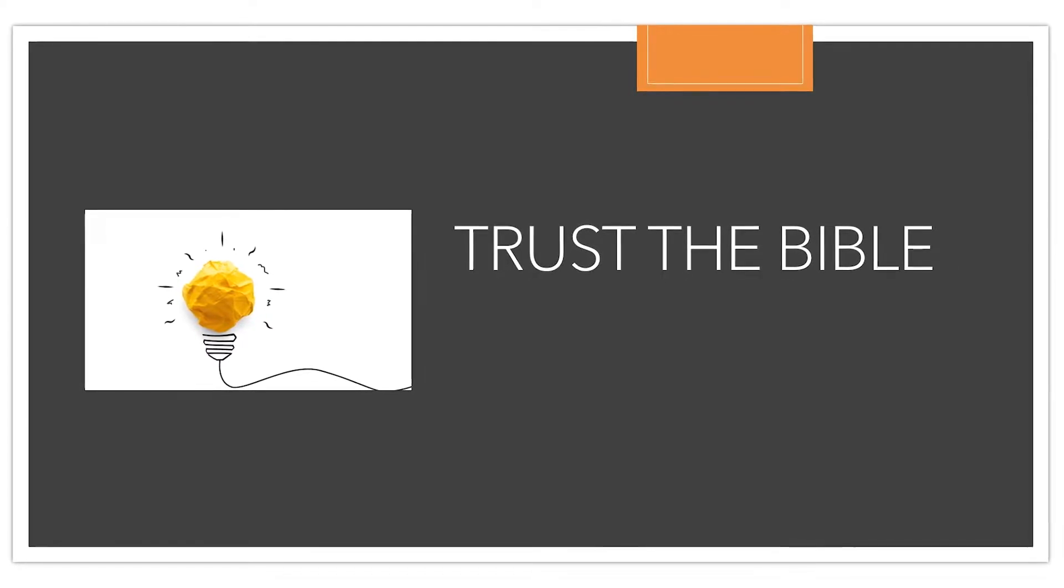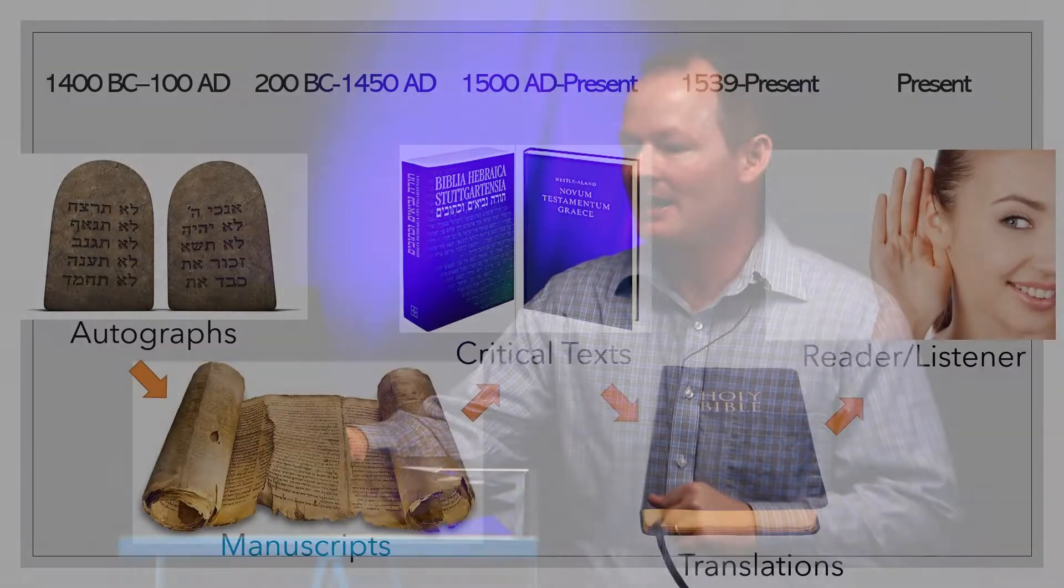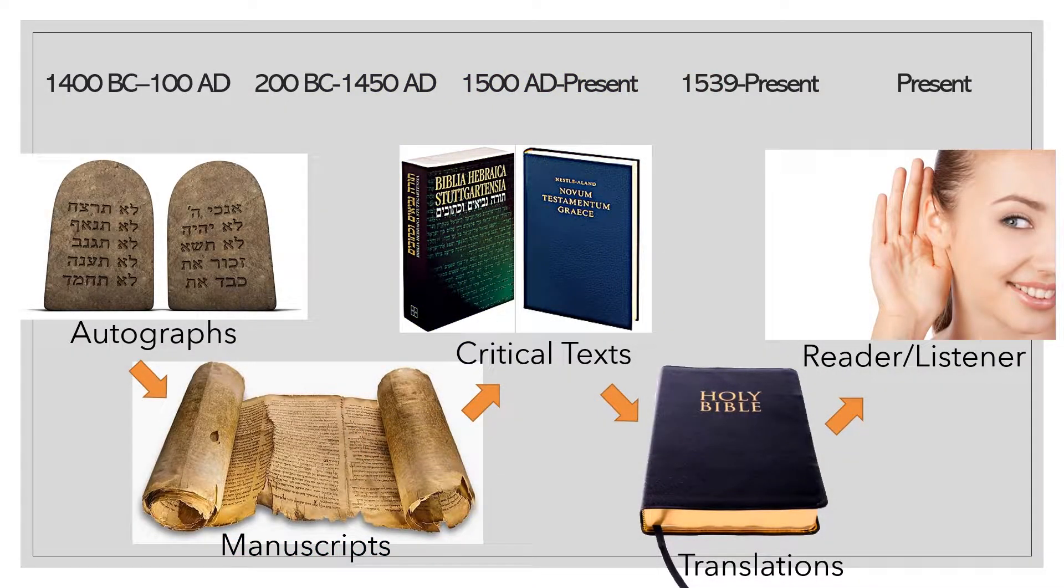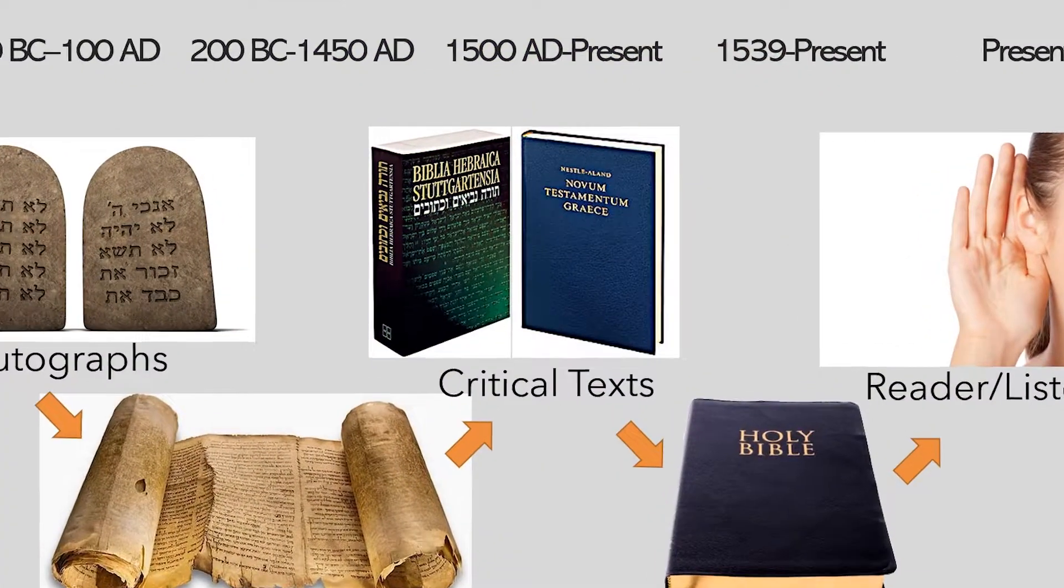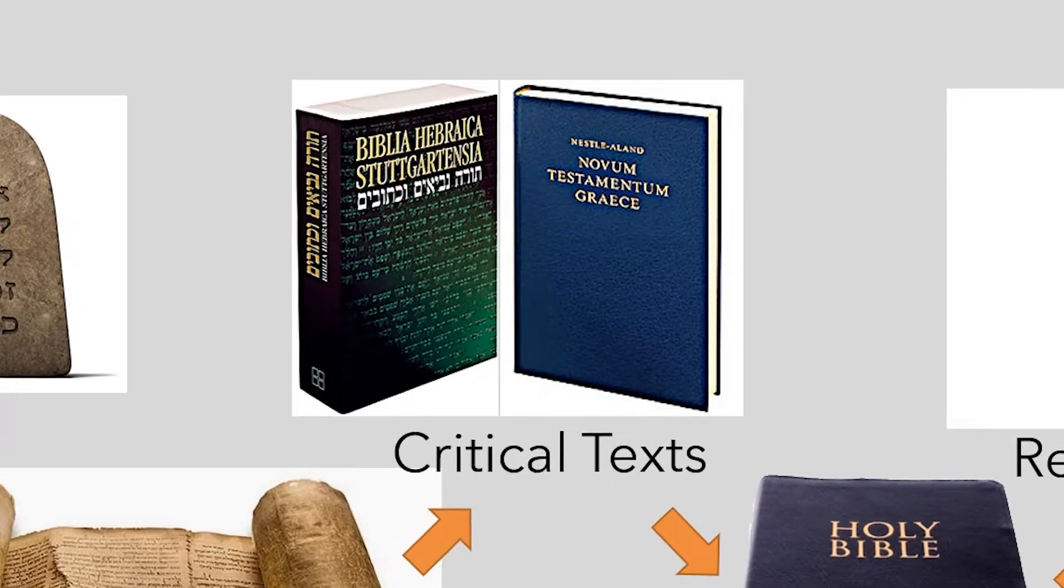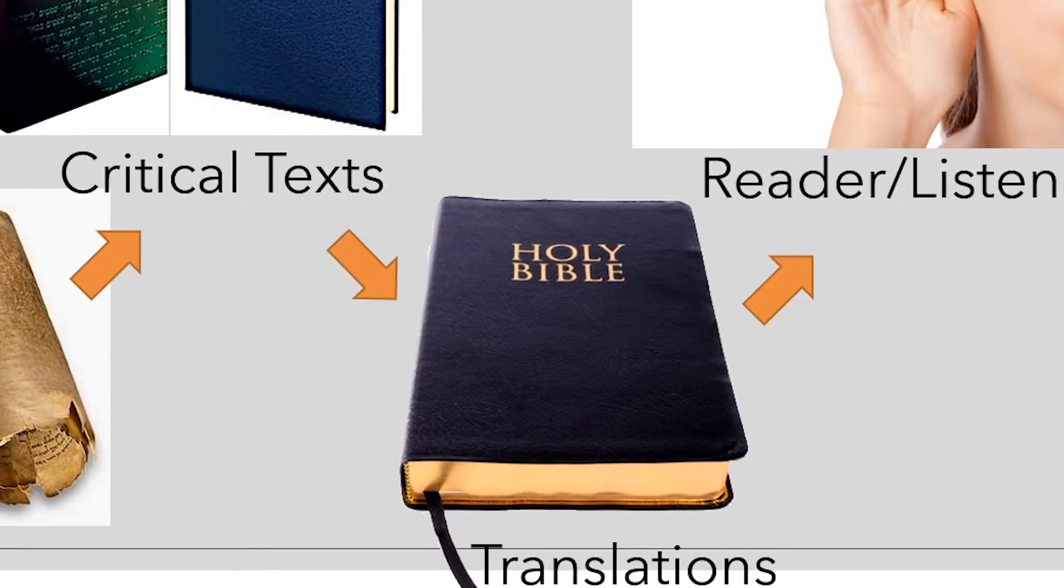Welcome back to this series on Trust the Bible. So far we have been looking at how we have gone from the autographs, the original writings of Scripture, all the way down through different steps, through manuscripts and then critical texts, and then eventually to our ears as we read and study the Bible. I'm going to focus on moving from critical texts to the translations that we have today.